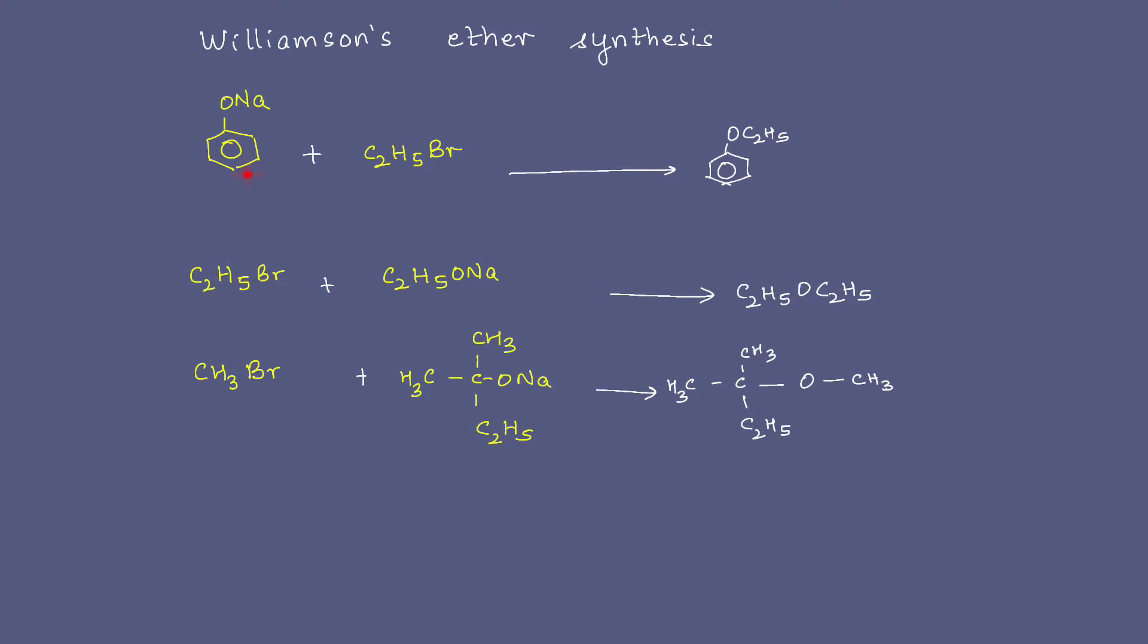The first one: sodium phenoxide, C2H5Br. Got it right? Take another colored pencil and if you got it right, give it a tick. Go on to the second one: C2H5Br and C2H5ONa. This was pretty easy. You got it right, wonderful, give yourself another tick.